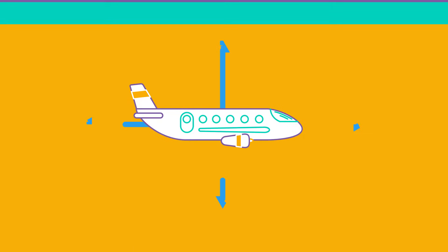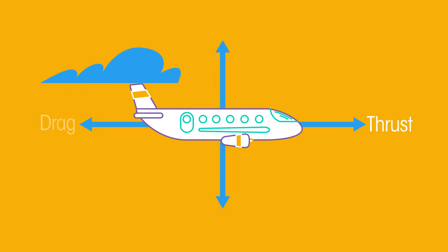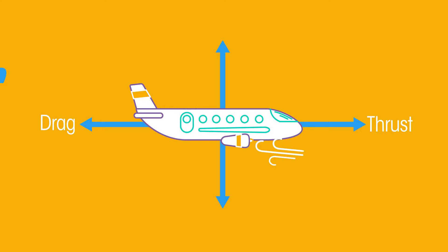Look at the diagram of the aeroplane shown. If the thrust of the engines is equal to the drag force, it will move forward at a constant speed. The plane will travel at constant height if its weight is balanced by the lift force from the wings. We have uniform motion.